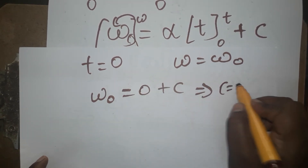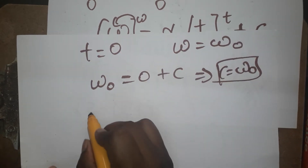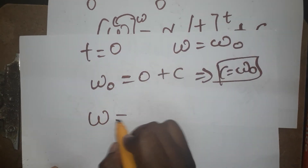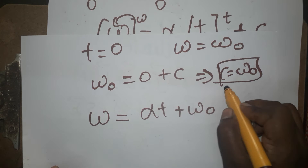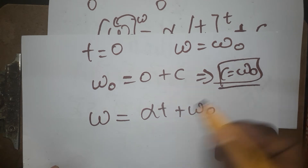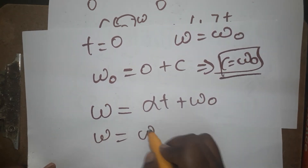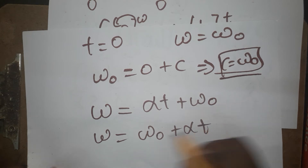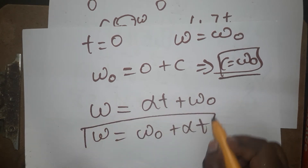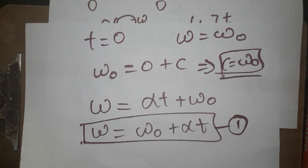Therefore C equals omega naught — the initial angular velocity. Substituting back, omega equals alpha t plus omega naught, which we rewrite as omega equals omega naught plus alpha t. So we have proved the first equation of rotational motion using Method 1, the integration constant method.